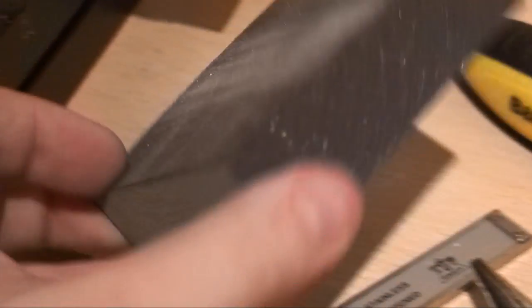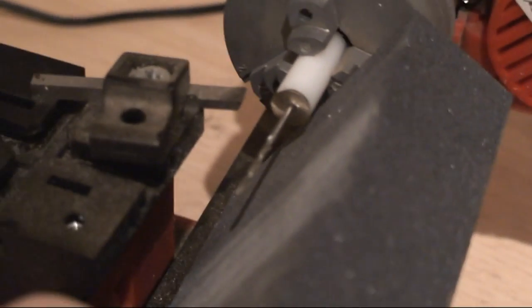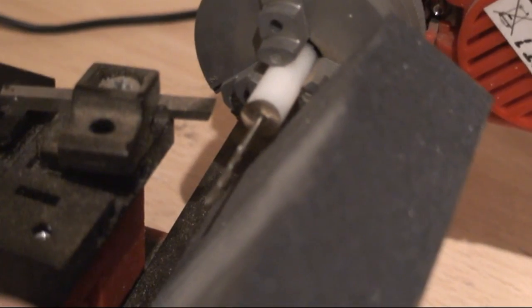Once I'm close, I'll then use the sanding block just to touch the edge as it's spinning, just to smooth that off until I'm happy.